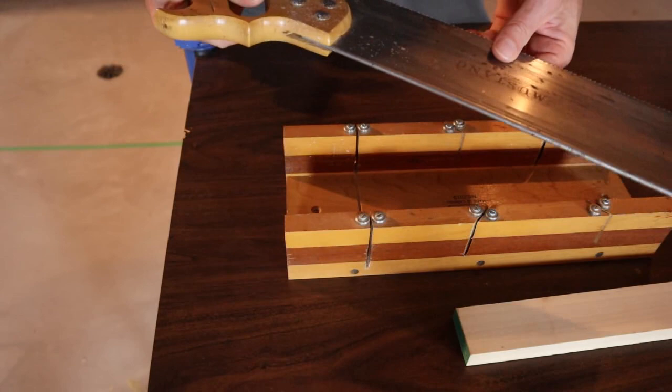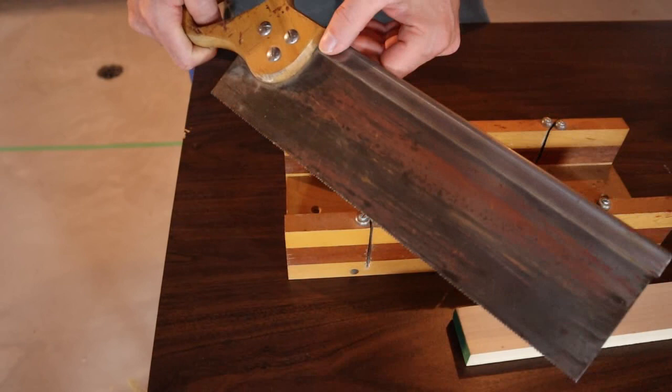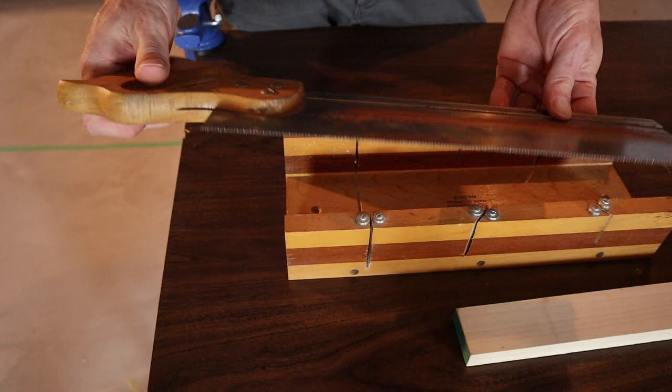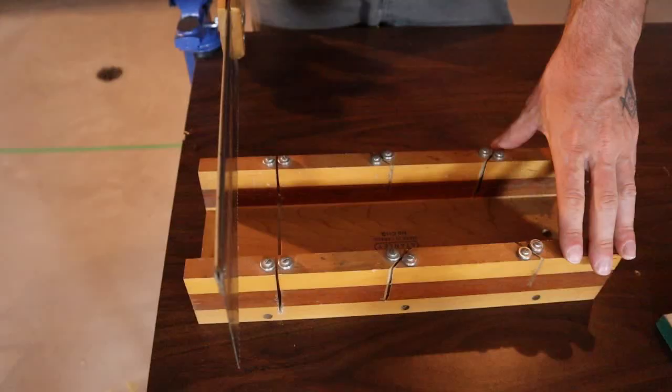Often when you buy a miter box they'll come with a saw, but if you have one and you don't have a saw for it, a good tenon saw or back saw like this will work perfectly. They're called back saws because of the spine down the back of the saw, and that's going to keep the saw really rigid when you're cutting. Japanese pull saws work really well, but any good cross-cut hand saw is going to work in a miter box perfectly for you.